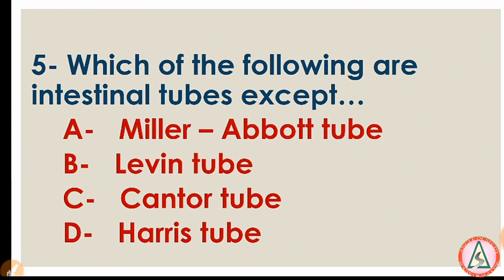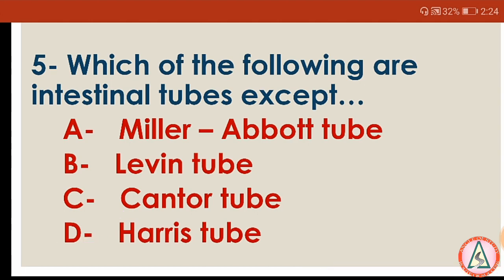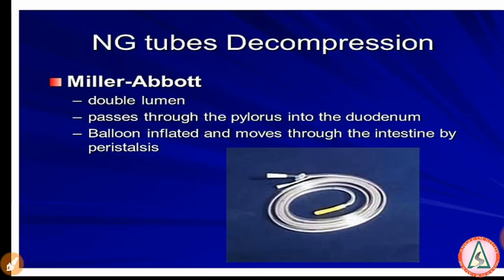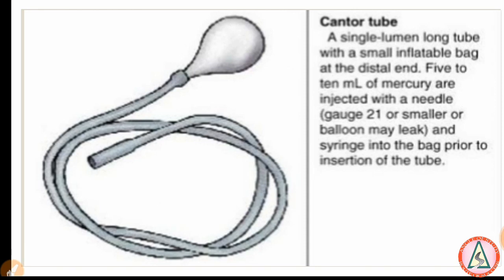Question number 5: Which of the following are intestinal tubes, except: A) Miller-Abbott tube, B) Levin tube, C) Cantor tube, D) Harris tube. The right answer is Harris tube. The Miller-Abbott tube is a two-lumen tube used to decompress the small intestine. The Levin tube is a single-lumen tube used to drain fluid and gas from the stomach. The Cantor tube is a single-lumen long tube with a small inflatable bag at the distal end.